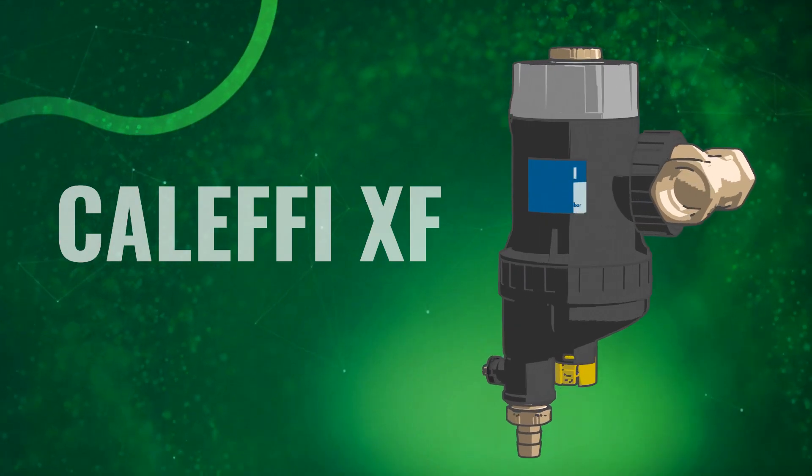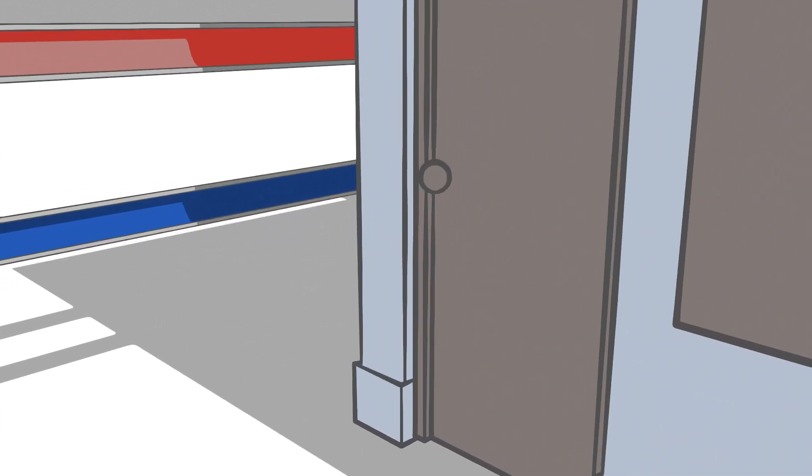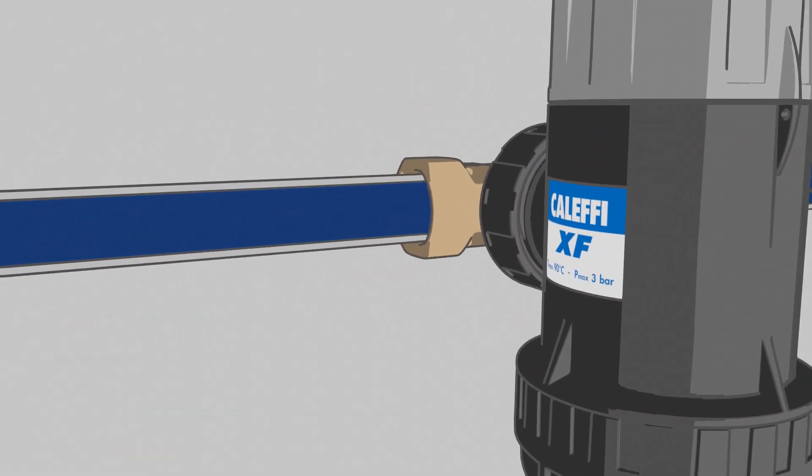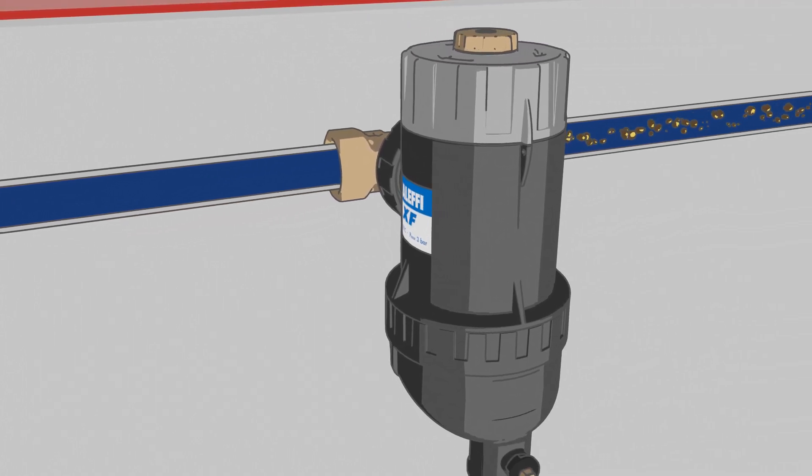That's where Caleffi XF comes in. It protects your system and keeps it running efficiently by separating impurities from the first passage, without reducing heat pump flow rate thanks to its large filtering surface.